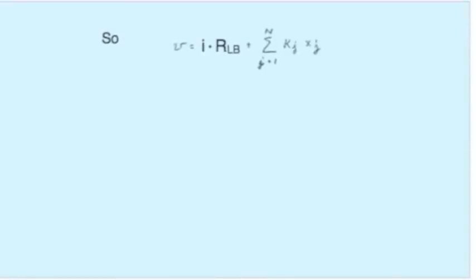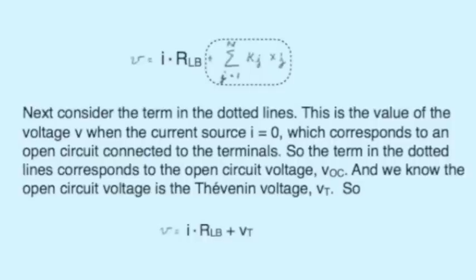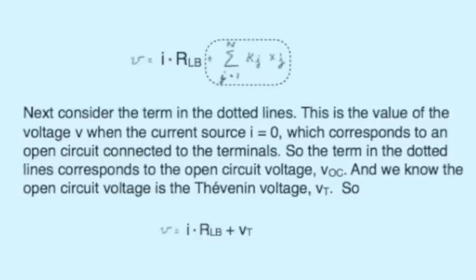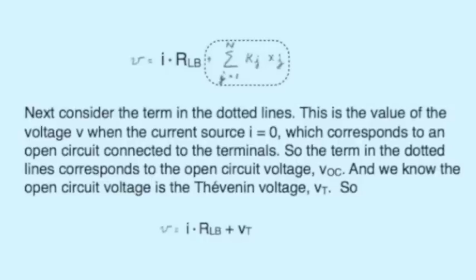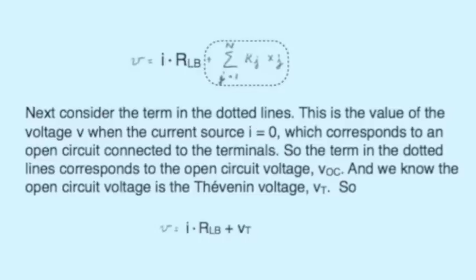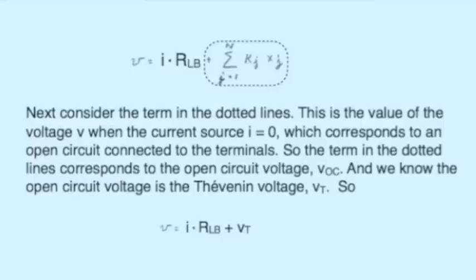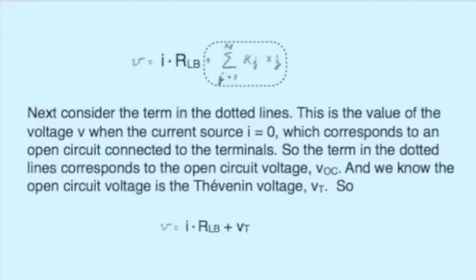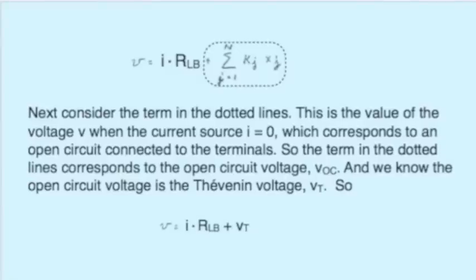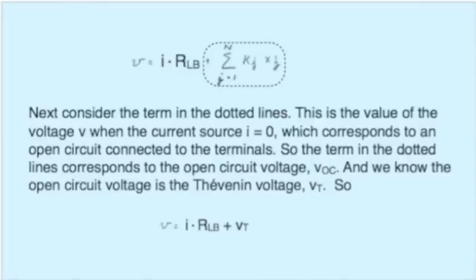Instead of writing K-naught, let's call that R sub LB — the look-back resistance. We can then say that V equals I times the look-back resistance, plus the contribution of all the independent sources inside the linear circuit part A. If we set the current source equal to zero — replacing it with an open circuit — then the only contribution to V is from those N sources, which gives the open circuit voltage. And we know from our previous discussion that the open circuit voltage is the Thevenin voltage. So the expression for V becomes: I times the look-back resistance, plus the Thevenin voltage.